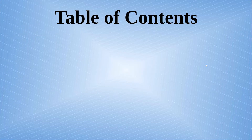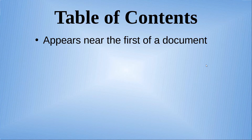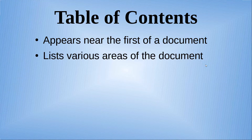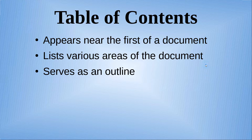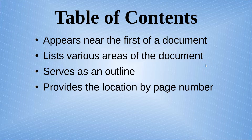A table of contents normally appears near the first of a document. A table of contents lists various areas of the document, serving as an outline of what the document contains.